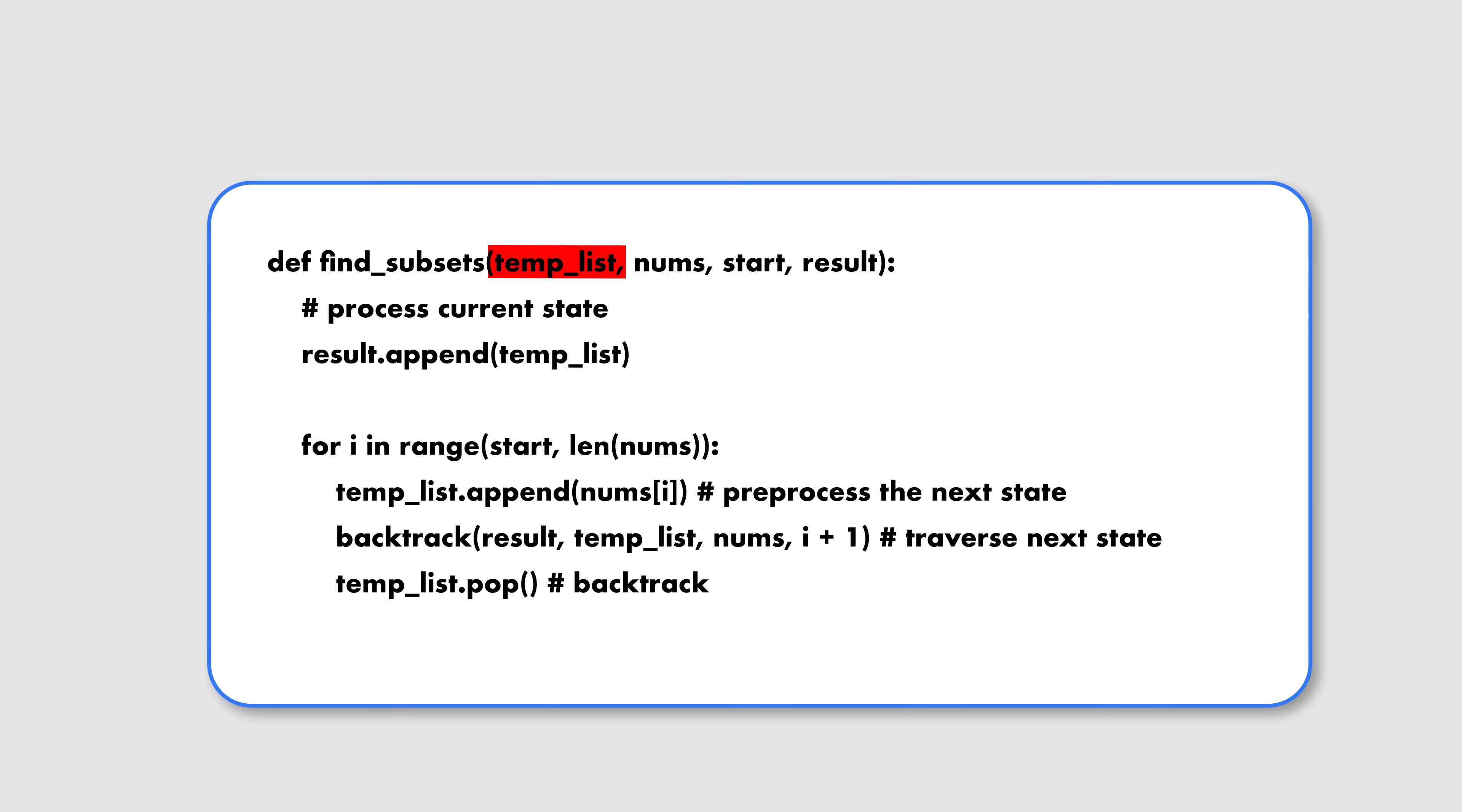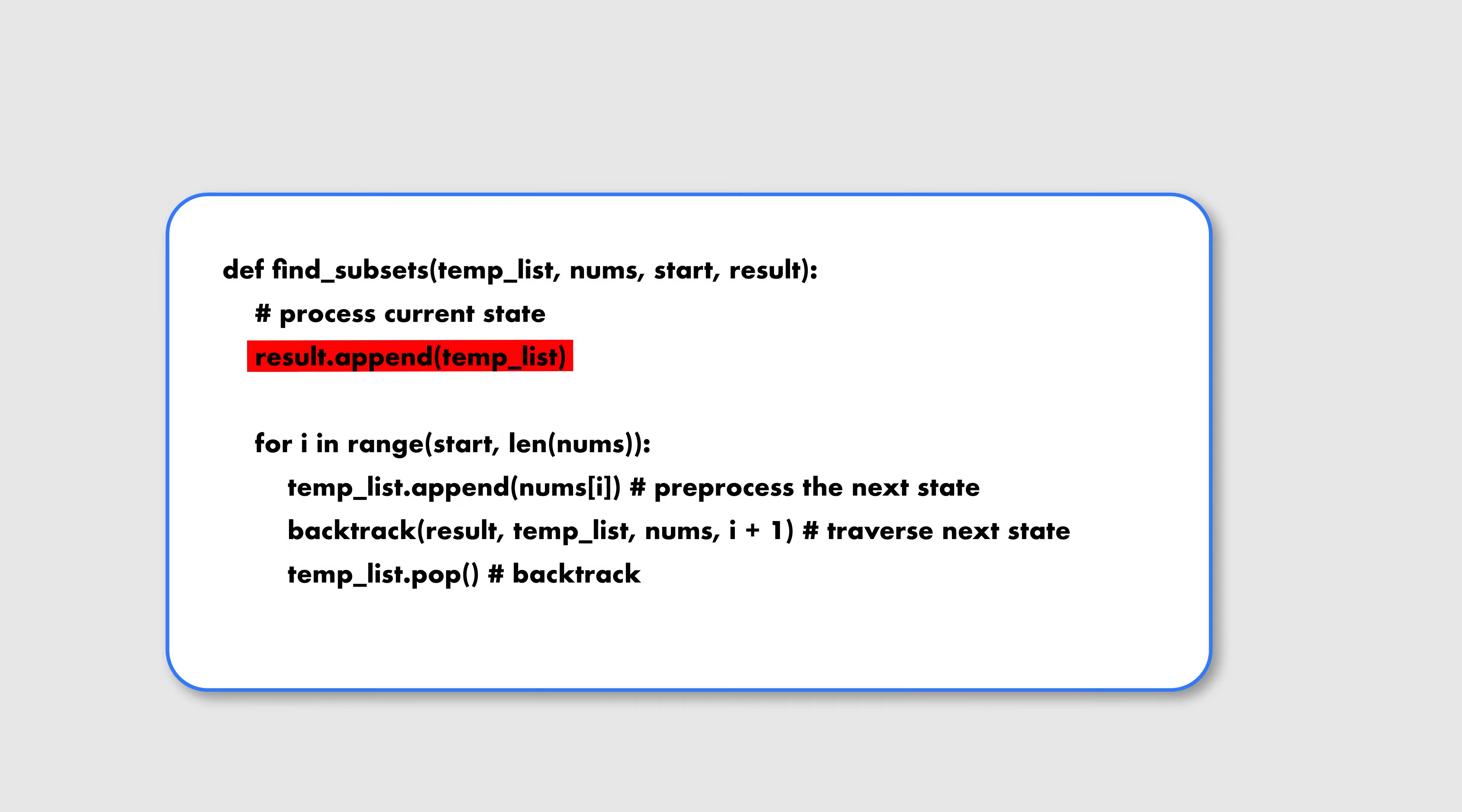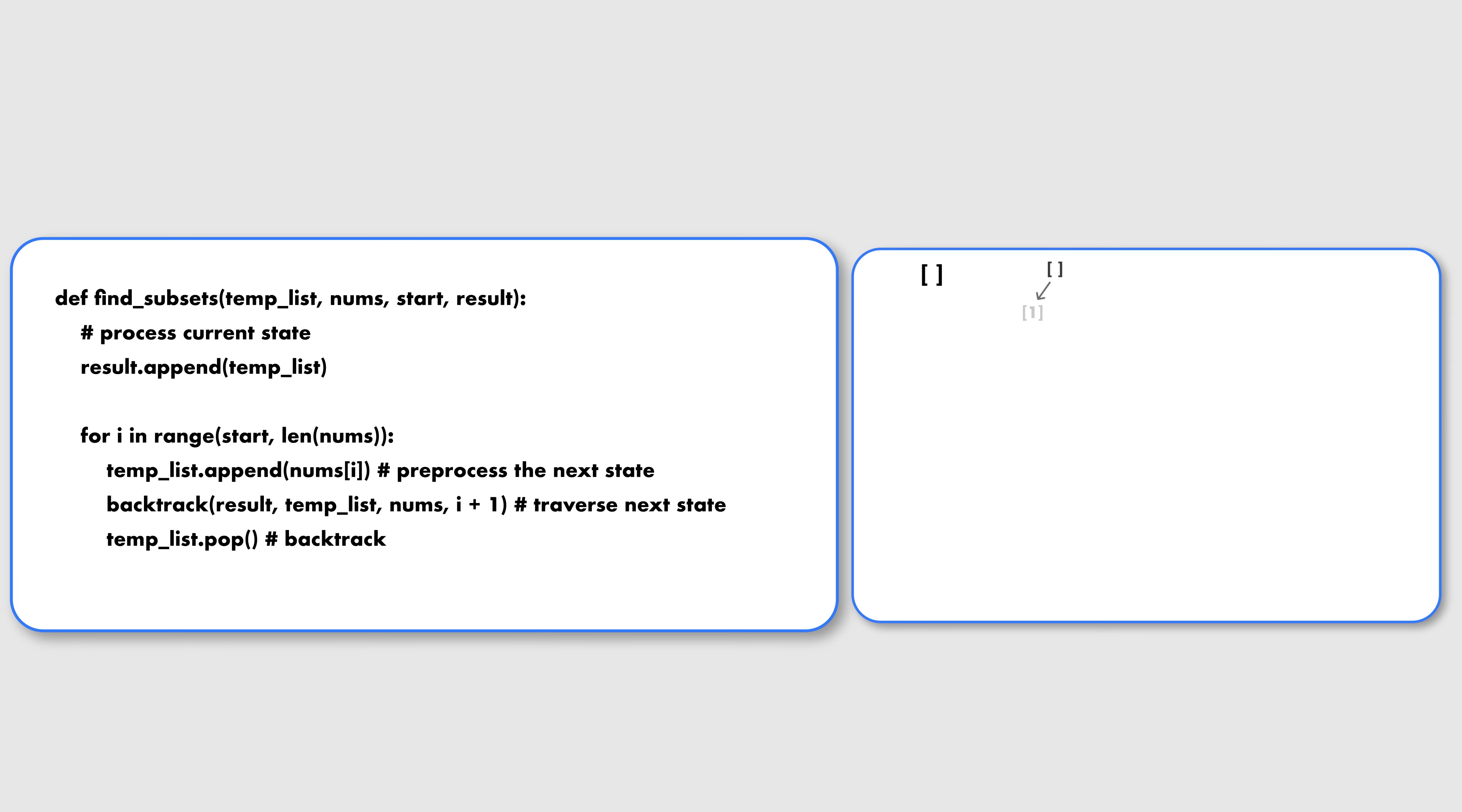Here is how it works with an example for finding subsets of unique elements in an array. Each state is the subset we are exploring. And since we want to return all the subsets, our processing would be just to save it in the result array. Now we are going to make multiple recursive calls, so from each state we will be branching out to multiple new states based on the subsets we want to find. Before we traverse the next state, we do any preprocessing to update what we are computing, and in this case we just choose the next number from the array to traverse its subtree of the next subsets.